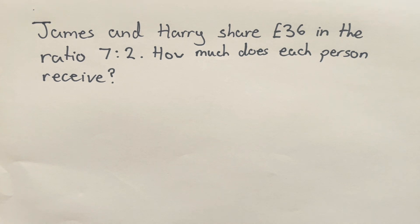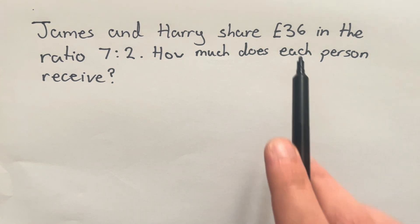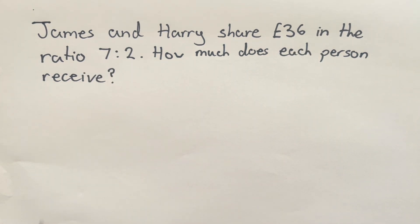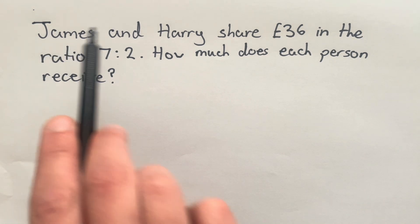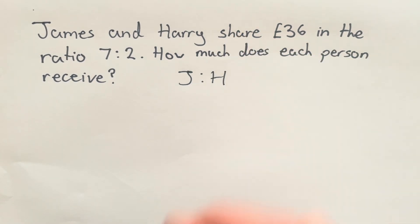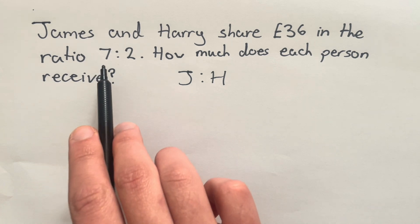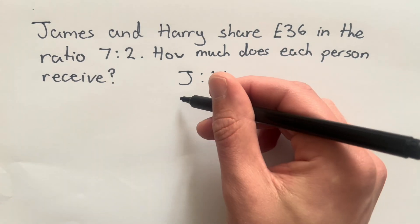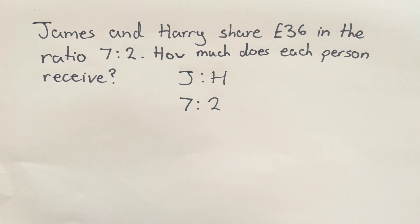In this second question, we're told that James and Harry share £36 in the ratio of 7:2. Again, we want to know how much each person receives. So like before, I'm going to start by labelling my ratio. I've got James and Harry here. So I'm going to write down my ratio, which was 7:2, keeping the same order from the question.